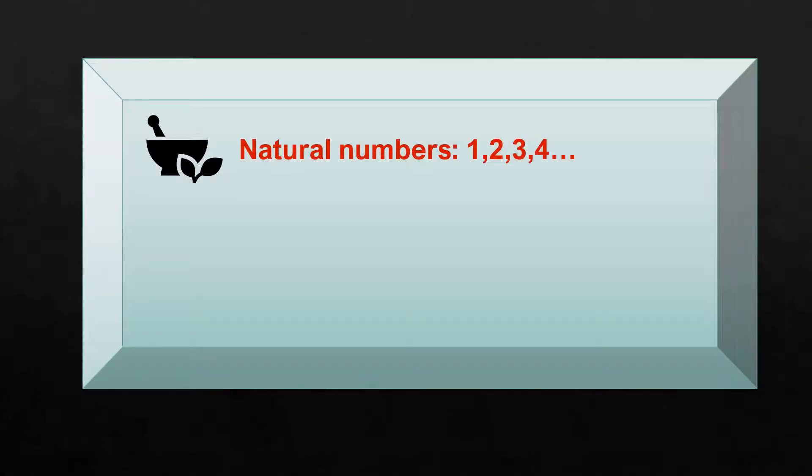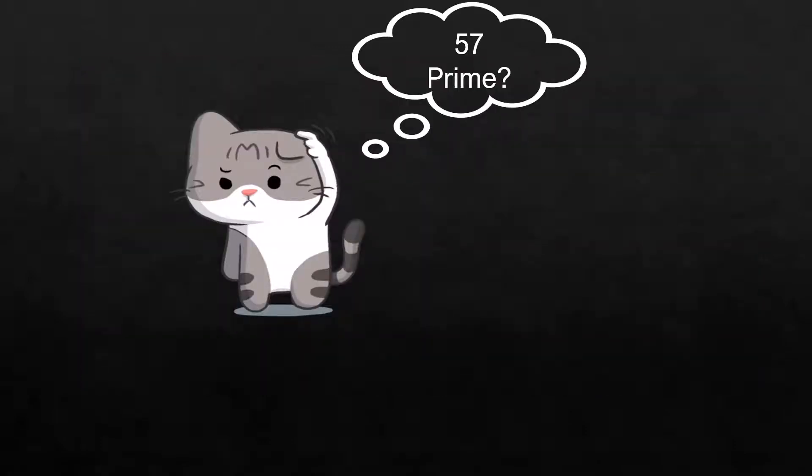Basically, a prime number is a natural number that cannot be written as the product of two smaller natural numbers. These are examples of some prime numbers. But do you often get confused recognizing prime numbers having more than one digit?